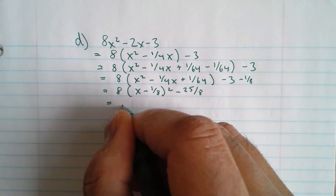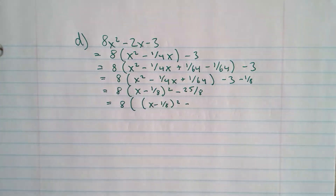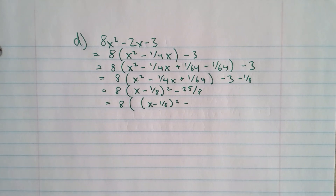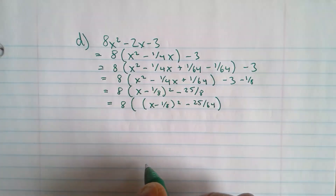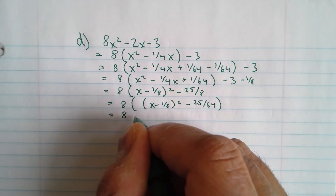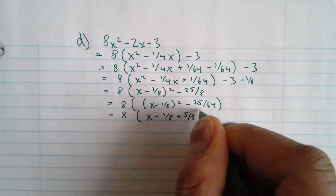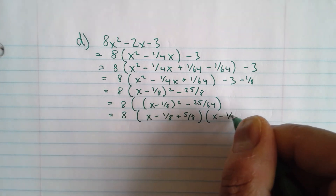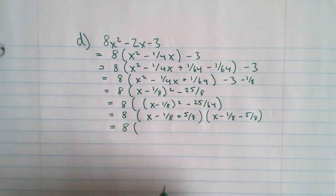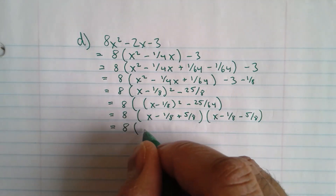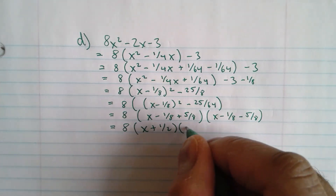Take out the 8 — this is the double bracket step. I get x minus 1 over 8 squared. Negative 25 over 8 divided by 8 gives me negative 25 over 64. This is my difference of squares. I get two brackets: x minus 1 over 8 plus 5 eighths, and x minus 1 over 8 minus 5 eighths. Negative 1 eighth plus 5 eighths is 4 eighths, or positive 1 half. Negative 1 eighth minus 5 eighths is negative 6 eighths, which is negative 3 quarters.